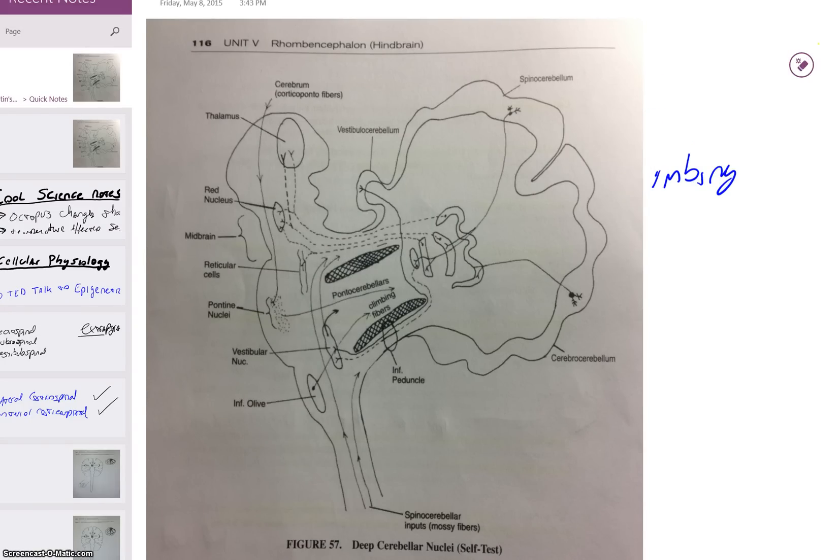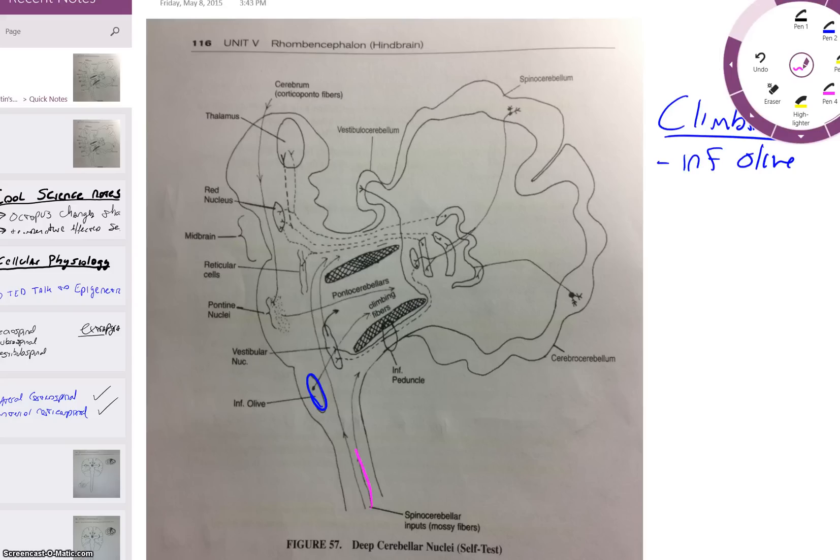Real easy to remember climbing fibers versus mossy. Climbing fibers will always originate in the inferior olive, right here. So if you've got a fiber coming in from here, it's got to be mossy. It's only climbing if it originates in the inferior olive.